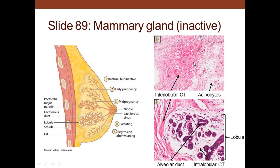This inactive mammary gland shows mostly connective tissue, but we can also see some of the alveoli and alveolar ducts. This is mature but inactive, so you mostly have just the ducts with little cells at the end. In early pregnancy you start to see some budding, and then in mid-pregnancy they are more elaborate, and at term the alveoli are fairly large, secreting the milk that will be released through the nipple.